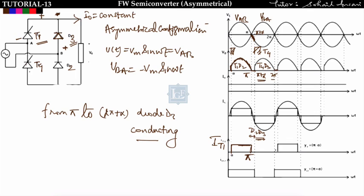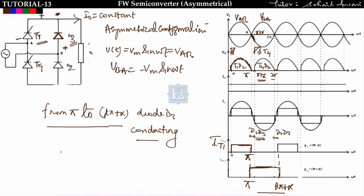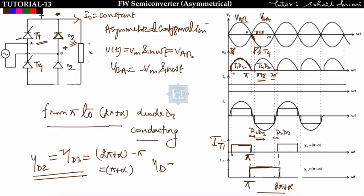After 2pi plus alpha, D2 and D3 will freewheel again. So diode D3 conducts from pi to 2pi plus alpha. The conduction angle of diode D3 equals 2pi plus alpha minus pi, which equals pi plus alpha. Similarly, the conduction angle of diode D2 is also pi plus alpha. Therefore, the conduction angle of the diode is pi plus alpha and the conduction angle of the thyristor is pi minus alpha.